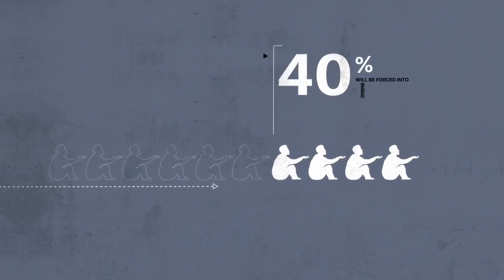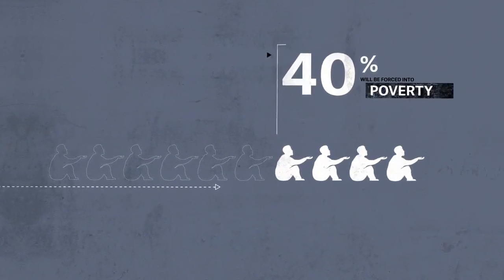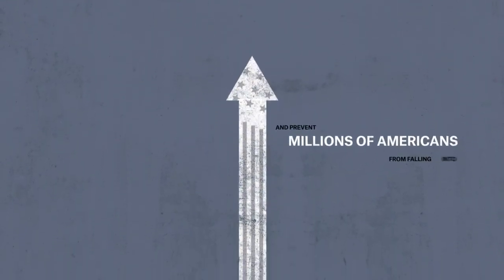In fact, 40% of middle class older American workers will be forced into poverty when they retire. How can we change the system and prevent millions of Americans from falling into poverty?